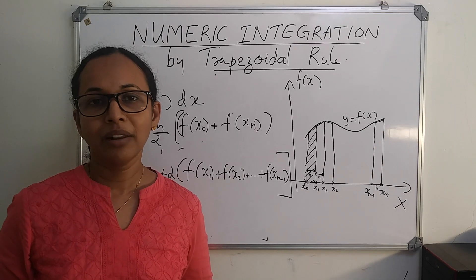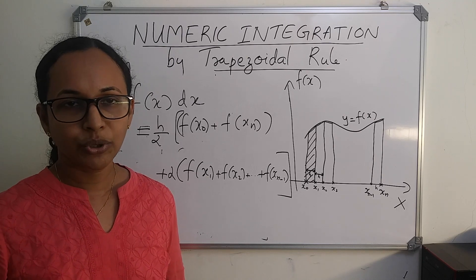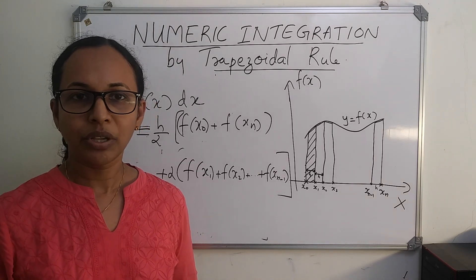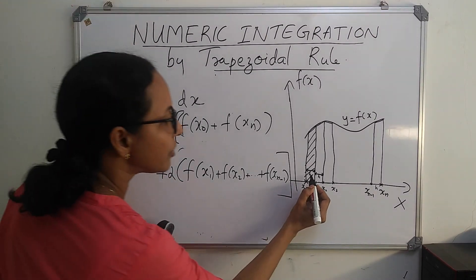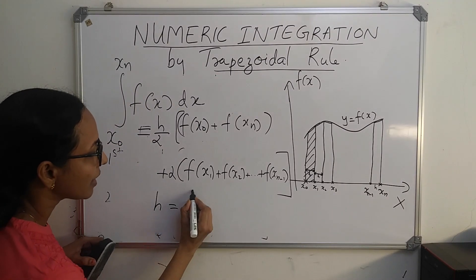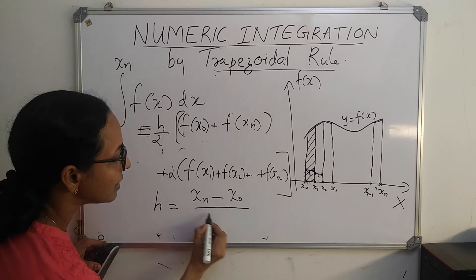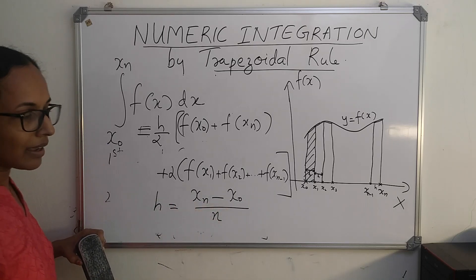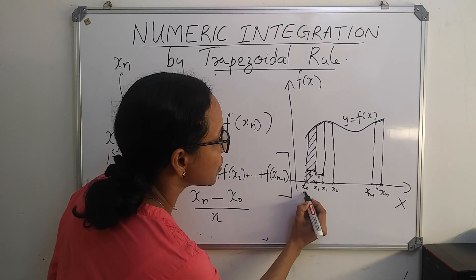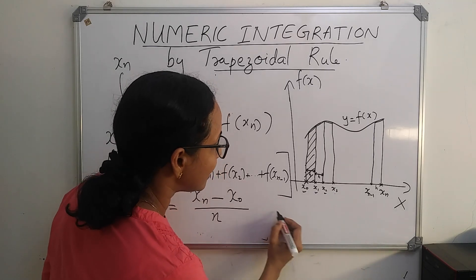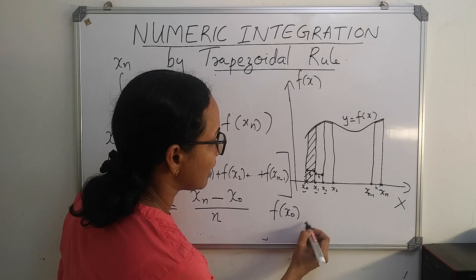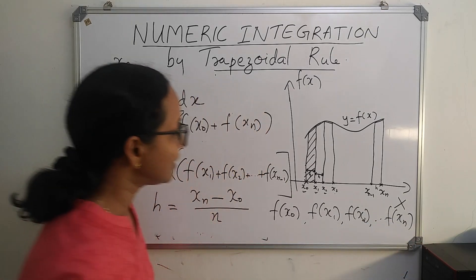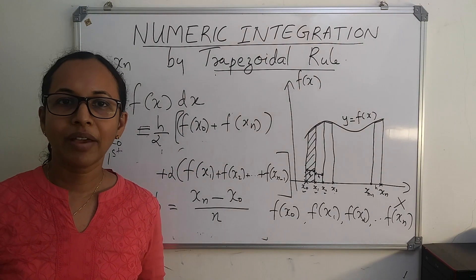When you get a problem to evaluate a definite integral using the trapezoidal rule, first decide n — that is, into how many subintervals you divide the given interval. Once n is decided, find h using h = (xₙ - x₀) / n. Then find the values x₀, x₁, x₂, ..., xₙ. Next, find the values f(x₀), f(x₁), f(x₂), ..., f(xₙ). Finally, substitute in the formula and evaluate the definite integral.